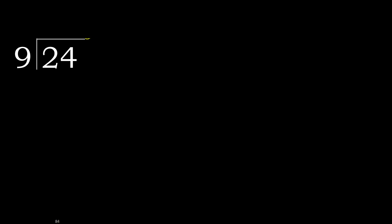24 divided by 9. 2 is less, therefore next. 24 is not less, therefore with 24. 9 multiplied by which number is nearest to 24 but not greater?